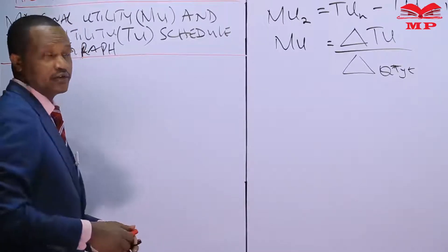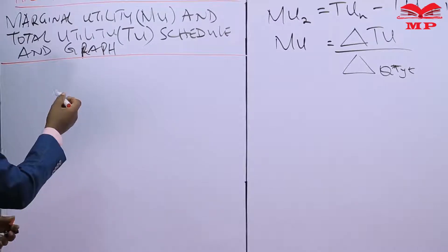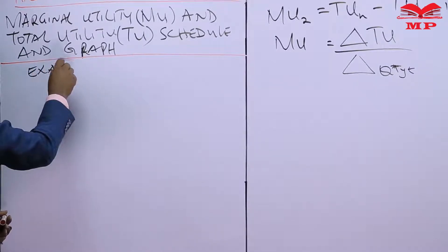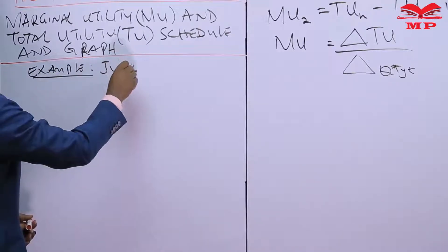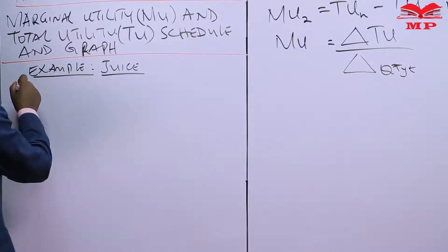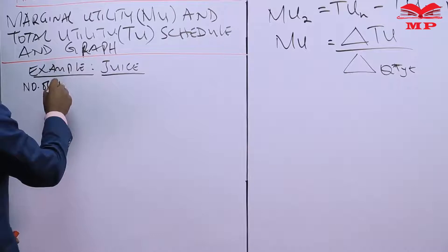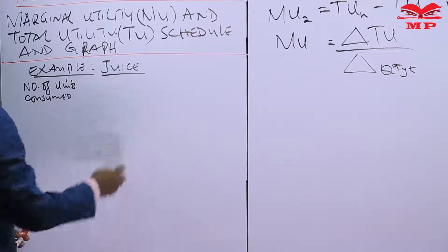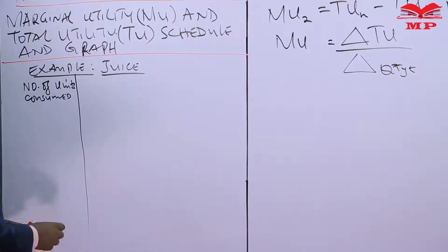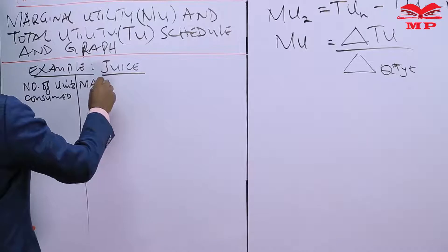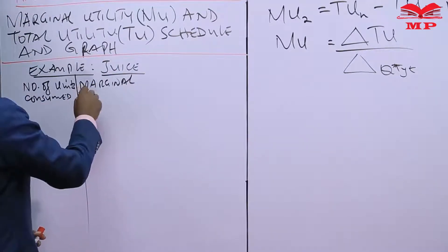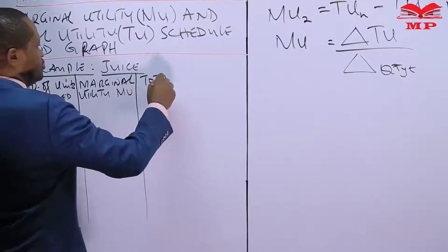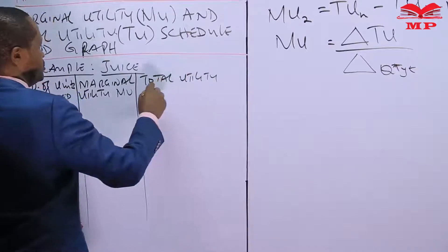For example, in our last lesson we gave an example of consumption of juice. The first column in the table is the number of units consumed, where one unit is a glass of juice. The second column is the marginal utility (MU), and the third column is the total utility (TU).